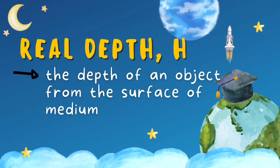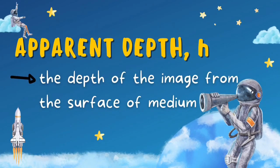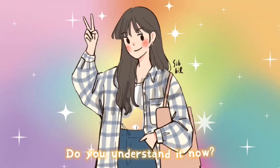The real depth, or capital letter H, is the depth of an object from the surface of medium. Meanwhile, apparent depth, or small letter h, is the depth of the image from the surface of medium. Do you understand Nina?